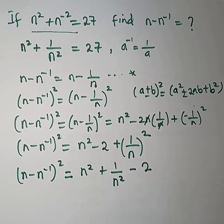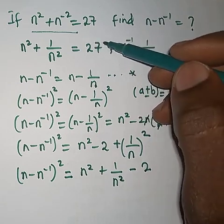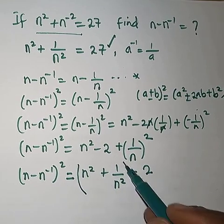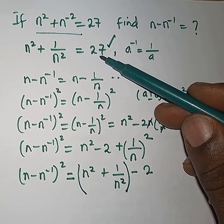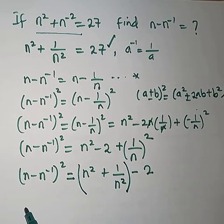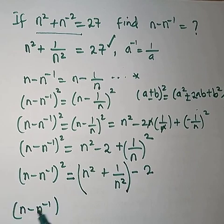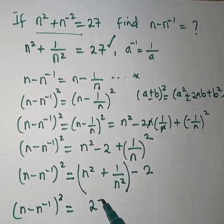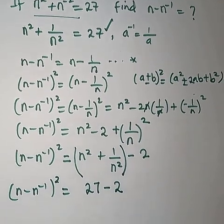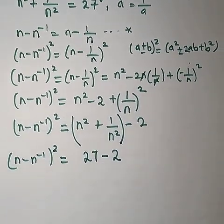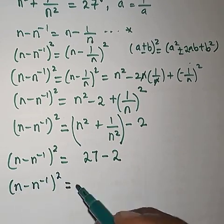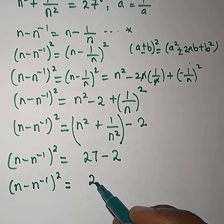So now from here, look at what we have — you can see that n squared plus 1 over n squared is the same thing as 27 that we have up here. So therefore we have n minus n to the power minus 1, all squared, equals 27 minus 2. So I have n minus n to the power minus 1, all squared, equals 27 minus 2, which gives me 25.